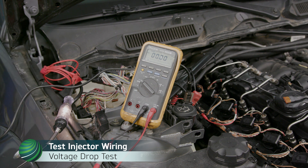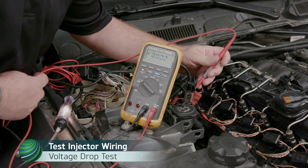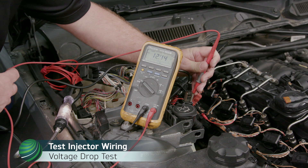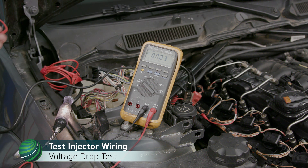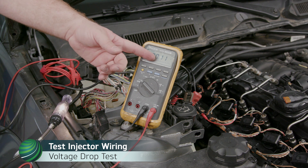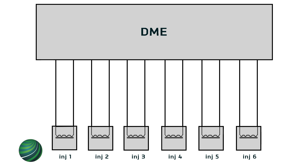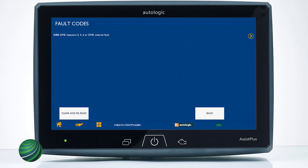The test light should illuminate. With your DVOM set to DC volts, check battery voltage at the jumpstart terminal — we have 12.44 volts DC. Then check the voltage at the DME connection; this reading is your voltage drop. We have 0.11 volts DC, which is a good reading. We want to see no more than two tenths of a volt drop. This confirms the injector wire to the DME is good. Repeat this test for each leg of each injector — two wires per injector. Since fault code 30BB does not clear even when disconnecting all injectors, and the injector wire tests okay, the issue has been isolated to the DME.